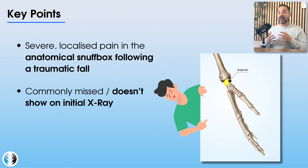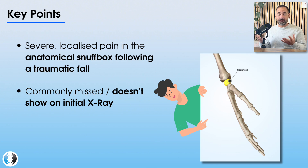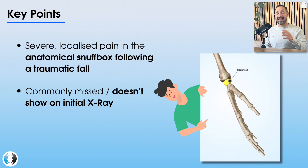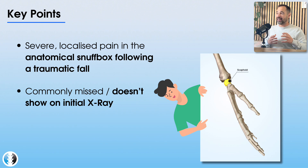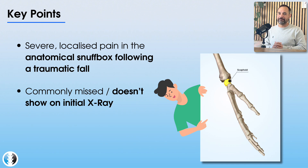The other key things to consider in terms of her objective examination are the reduced range of movement and grip strength. That's often a really common indicator because in order to grip, we place weight and load through the thumb and through the scaphoid. The fact that this was really irritable for her might have been another key indication of a scaphoid fracture.